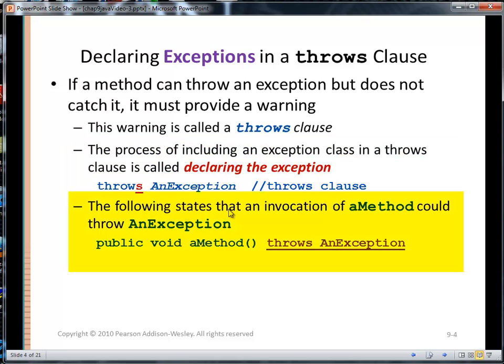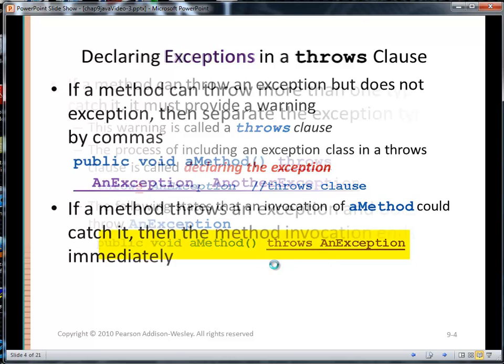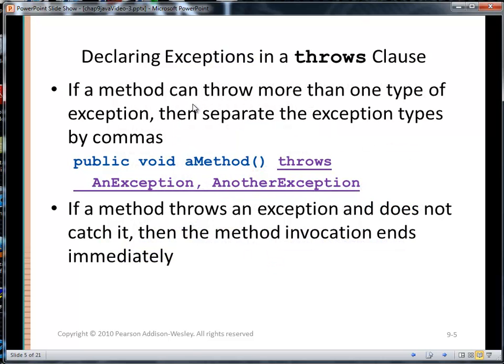Now, the following states that an invocation of a method could throw an exception. So here's my declaration. In this signature, public void a method, and I'm declaring that I might throw an exception. So it's throws an exception. This allows me, as a programmer, if I'm going to use a method, I know that I should probably call you inside of a try catch block. Now, if a method can throw more than one type of exception, then separate the exception types by commas.